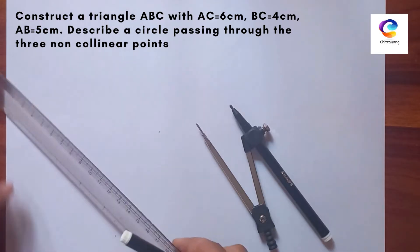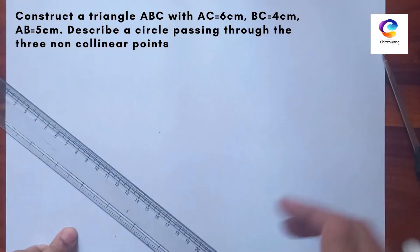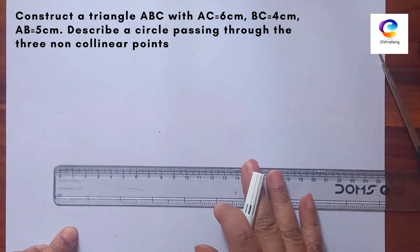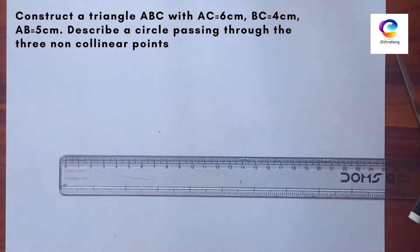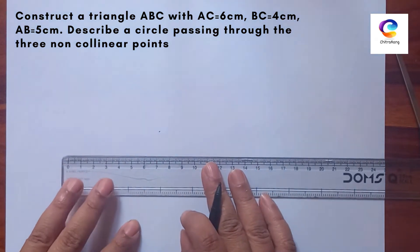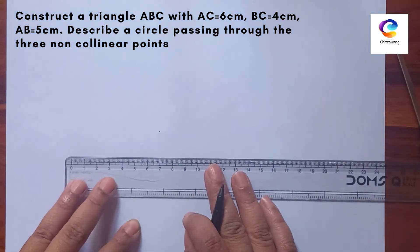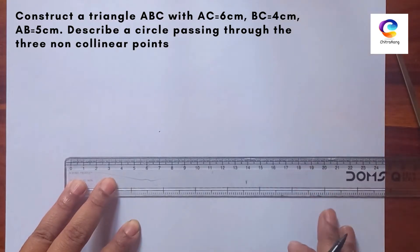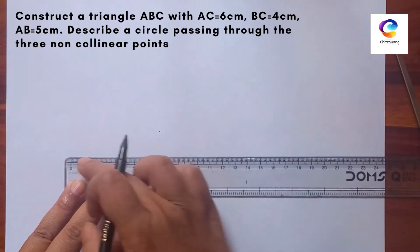First, we will take the side AC, 6 cm. We require the space below this line also, so leave some space on the bottom side.